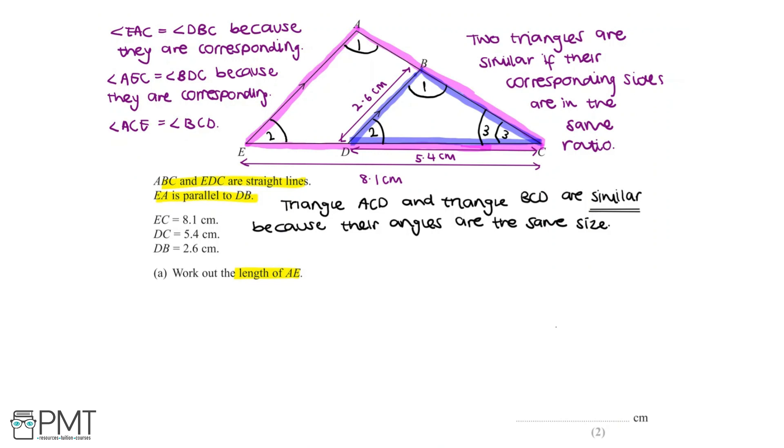Now that we've proven that triangle ACD and triangle BCD are similar, we can use a scale factor in order to find the length of AE. We mentioned that two triangles are similar if their corresponding sides are in the same ratio, and so we're given enough information to find this scale factor. We know that length EC is equal to 8.1cm, and length DC is equal to 5.4cm.